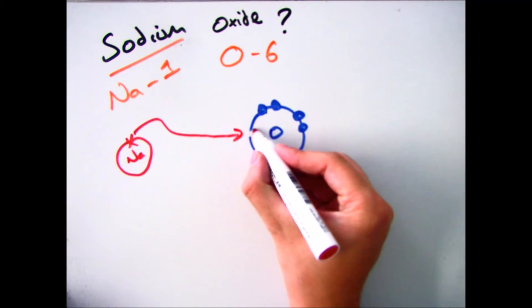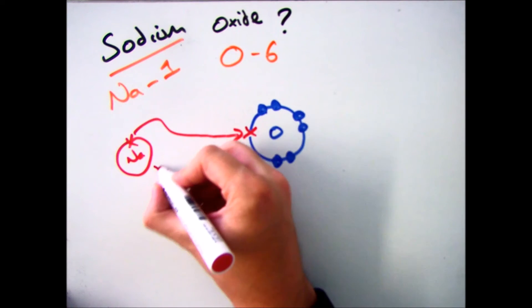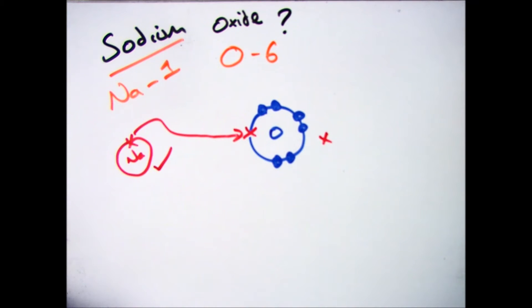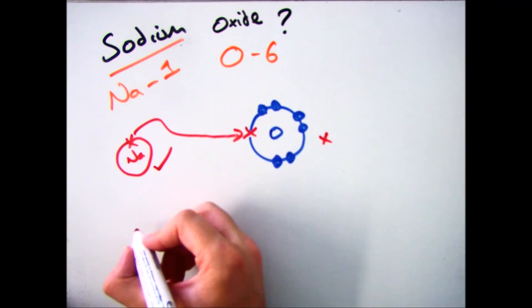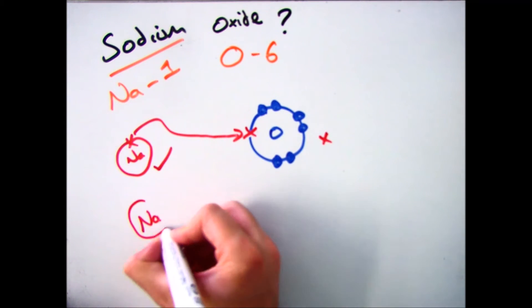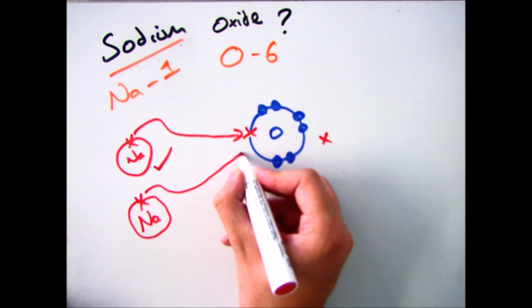And then do the same process. Sodium, in group 1, loses an electron, gives it to oxygen. We've got the same issue again here. Sodium is now complete, but oxygen isn't. So we get another sodium atom, draw it out again, and move that electron across.